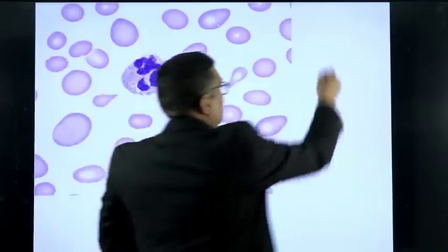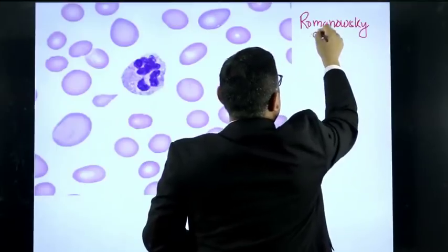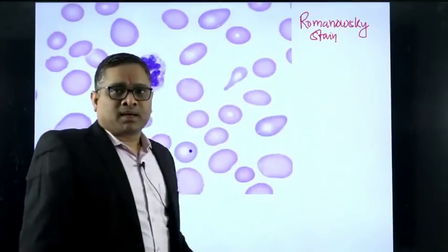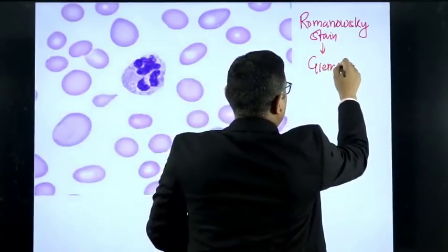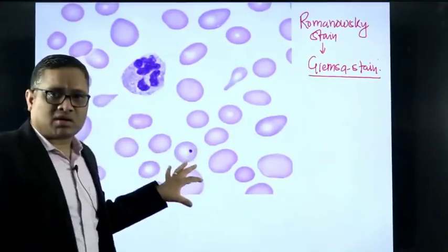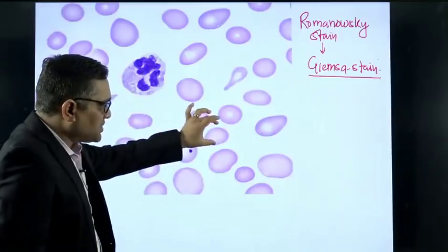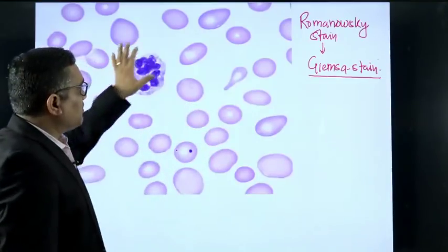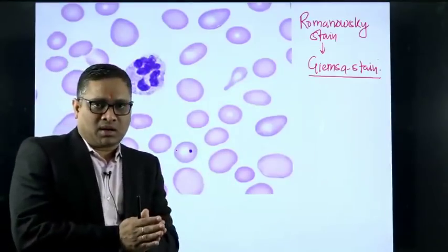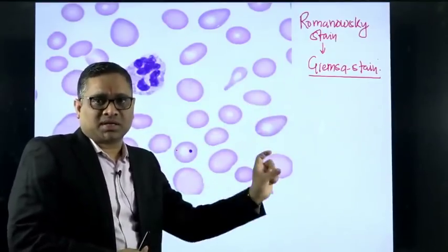This stain is broadly known as Romanovski stain. Romanovski stain is a family of stains, and one of the important stains in that family is the Giemsa stain, which we are looking at right now. We can identify it as a Giemsa stain because the RBCs appear red or orange in color and the background is pale or white.